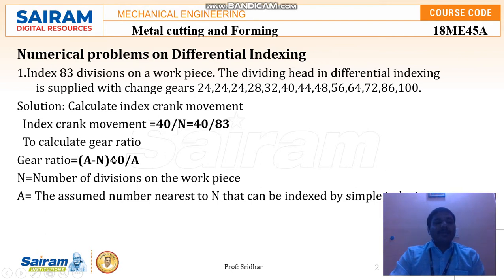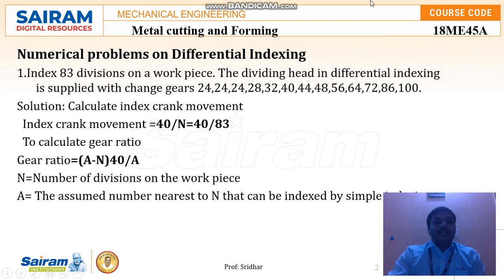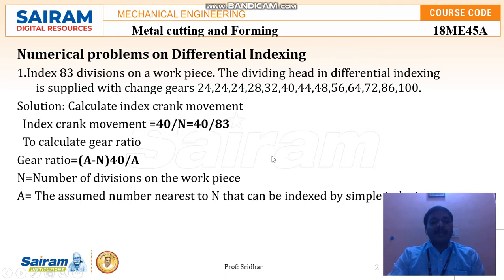A is the assumed number nearest to N that can be indexed by simple indexing. The index number we got is 83. By assuming the nearest number to 83 from the supplied change gears, we have two candidates: 72 and 86. Comparing these, the nearest number to the indexing is 86. So we consider A = 86. Now based on this we can find the gear ratio: (A − N) × 40 / A.